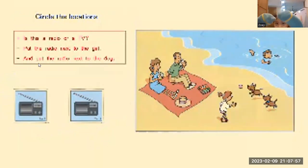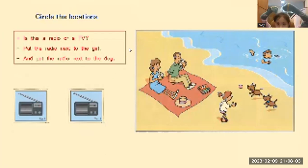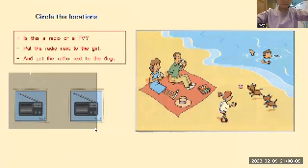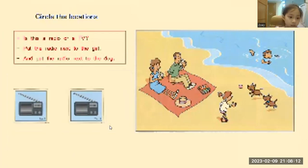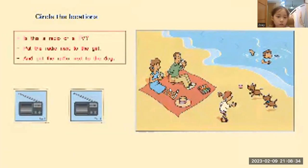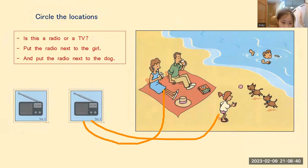Okay, so now Zoe, I want you to listen to me. Where is the radio? Okay, so what is this one, Zoe? Is this a radio or a TV? It's a radio. Very good. So now, Zoe, I want you to draw a line. Put the radio next to the girl.